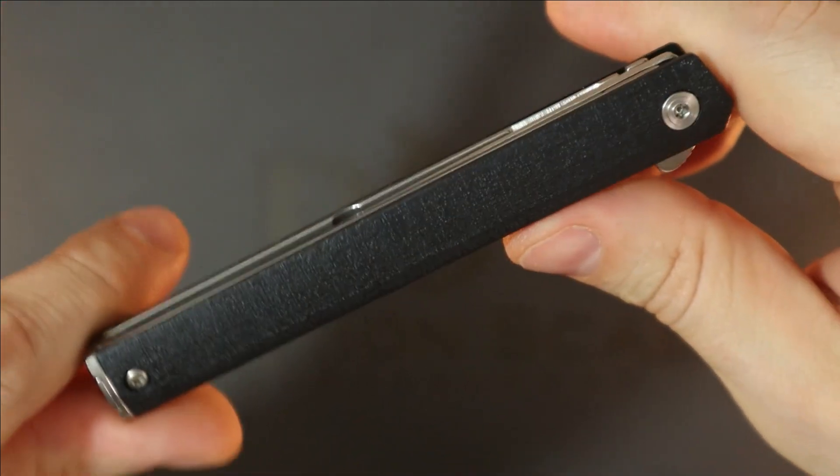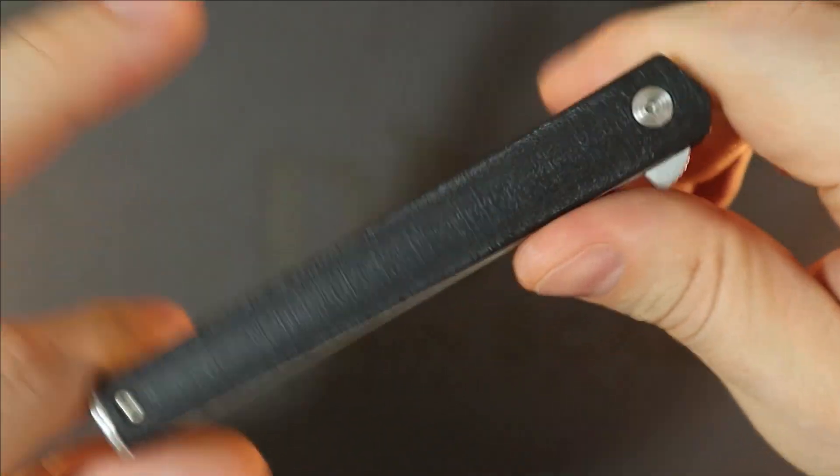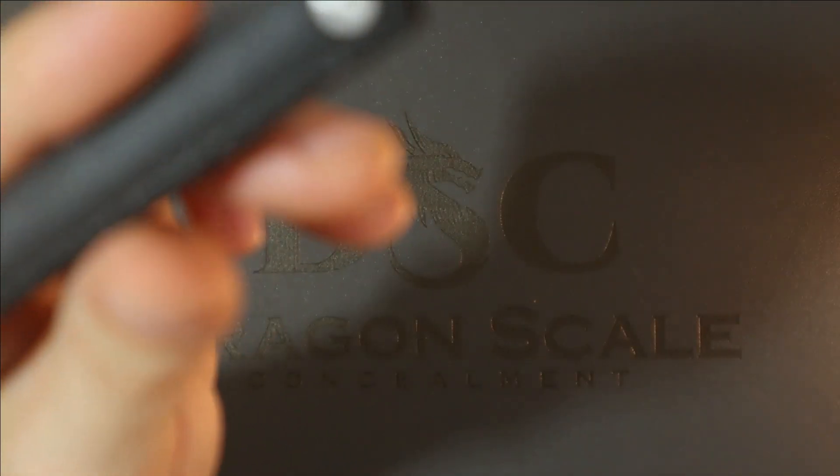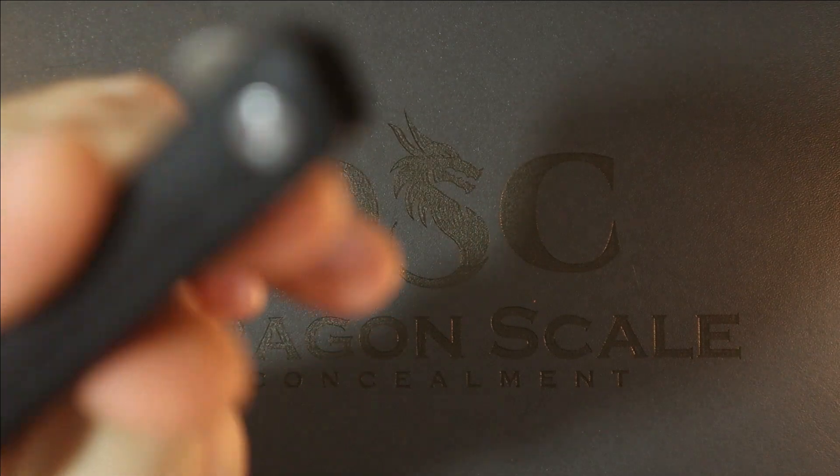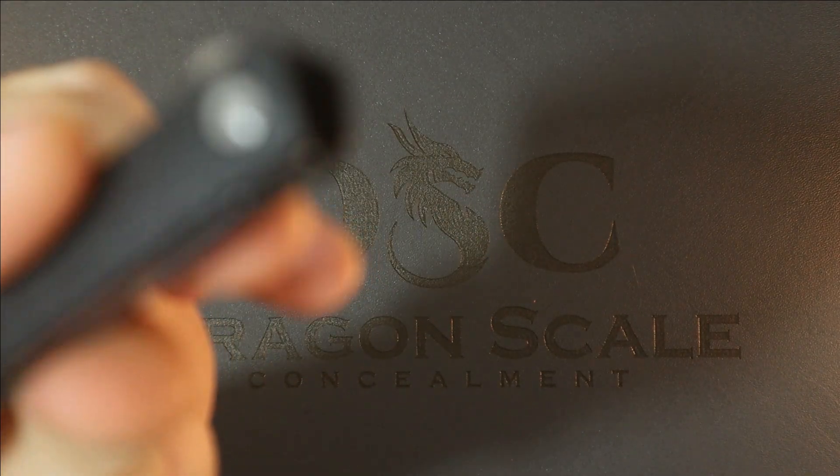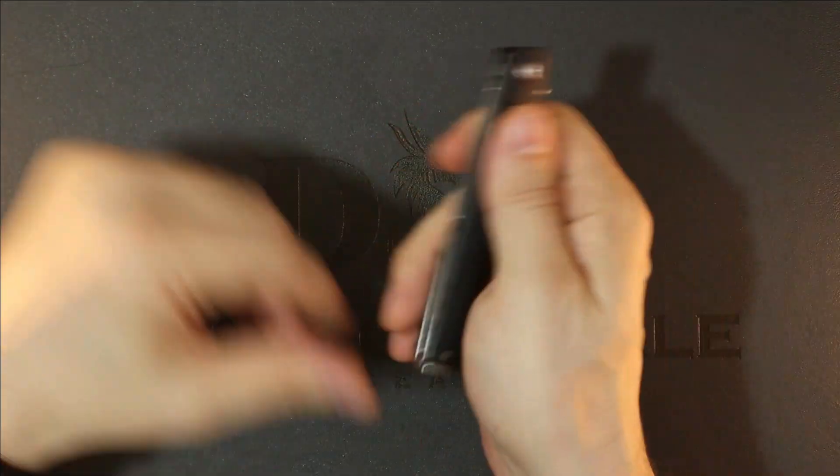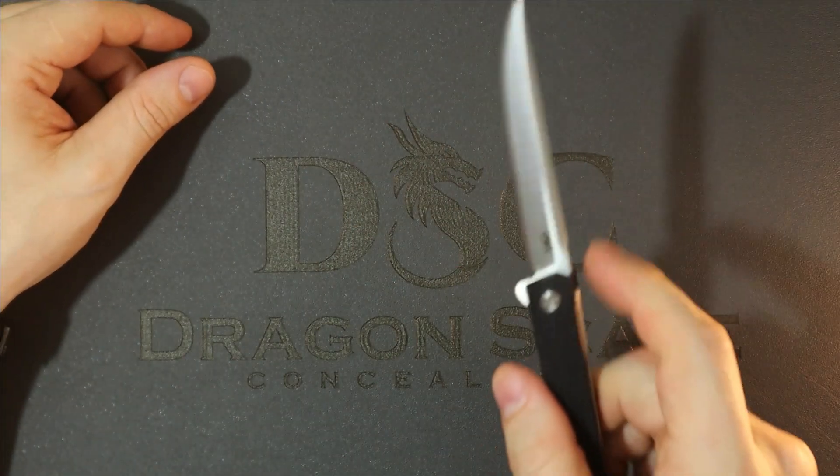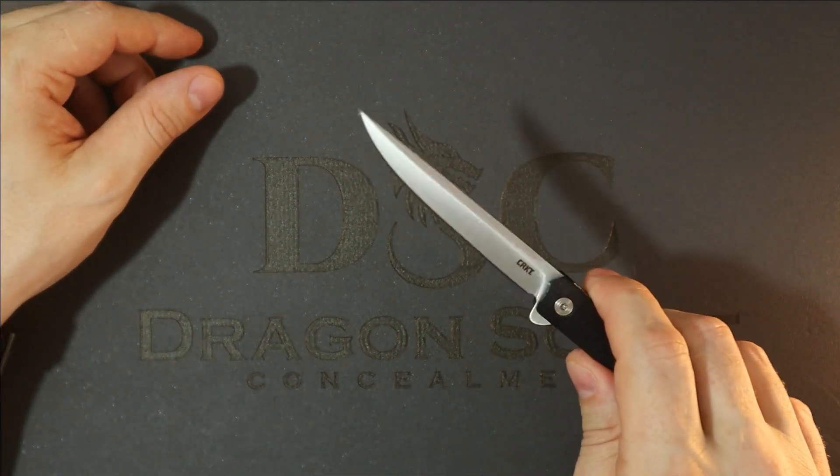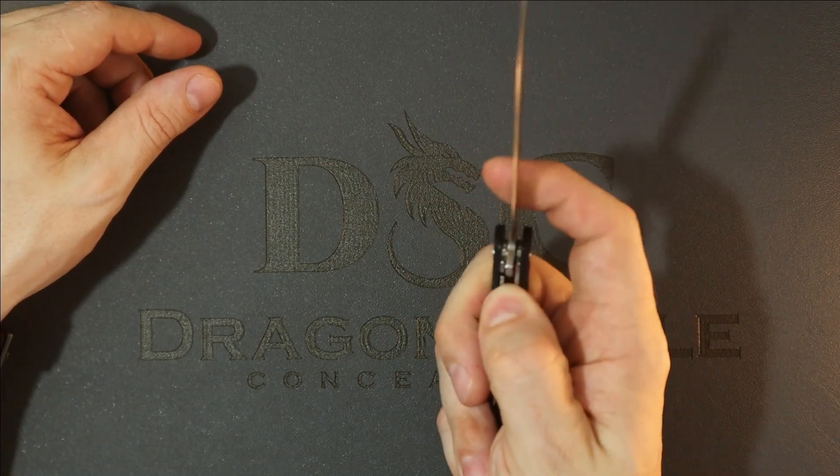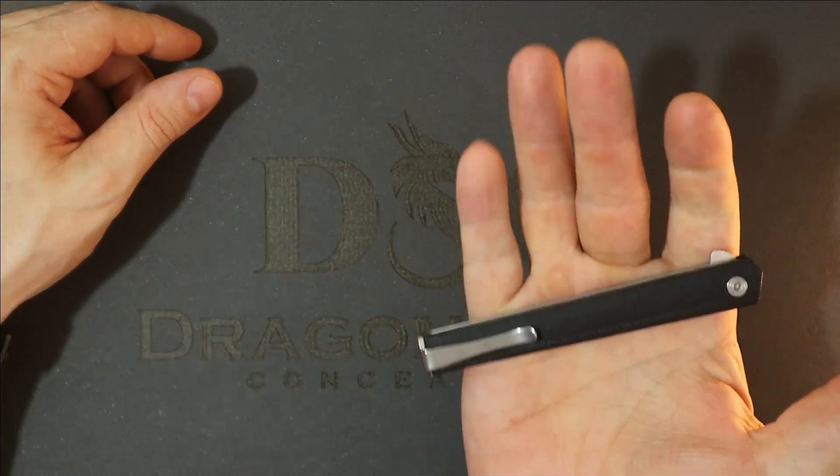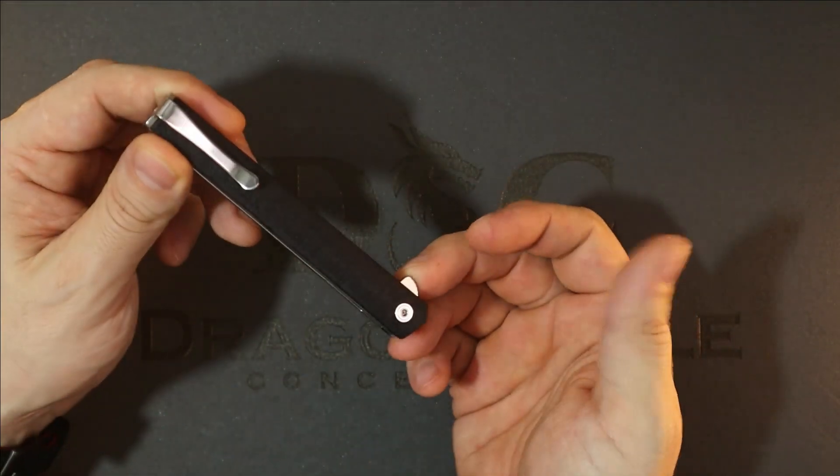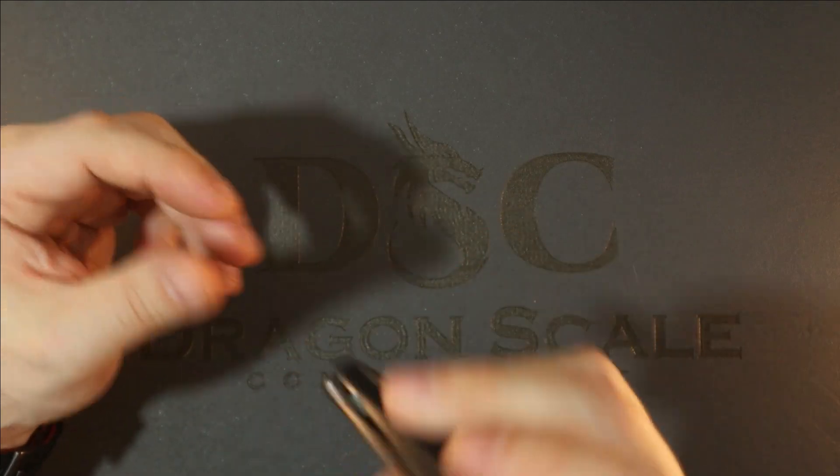This is a G10 model that goes for about 45 bucks with a liner lock. It's AUS8 steel, so nothing to write home about, but it's okay. I think around the office this would be fine. It's a little on the longer side, but if you did have an office gig, this could go in a shirt pocket for sure.